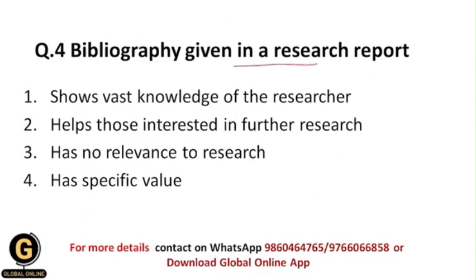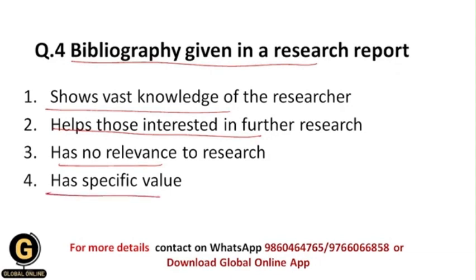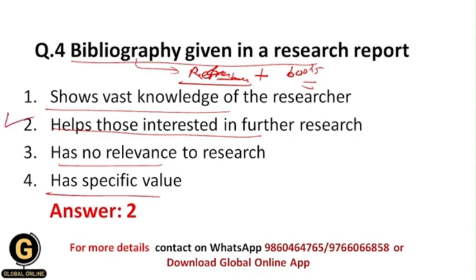Question 4: Bibliography given in a research report — does it show vast knowledge of the researcher, help those interested in further research, have no relevance to research, or have no specific value? As explained earlier, bibliography includes references used during the research process as well as books and articles not directly referred to but relevant to the topic, so the reader can grab more knowledge and do further research. Therefore, the correct answer is option 2: it helps those interested in further research.